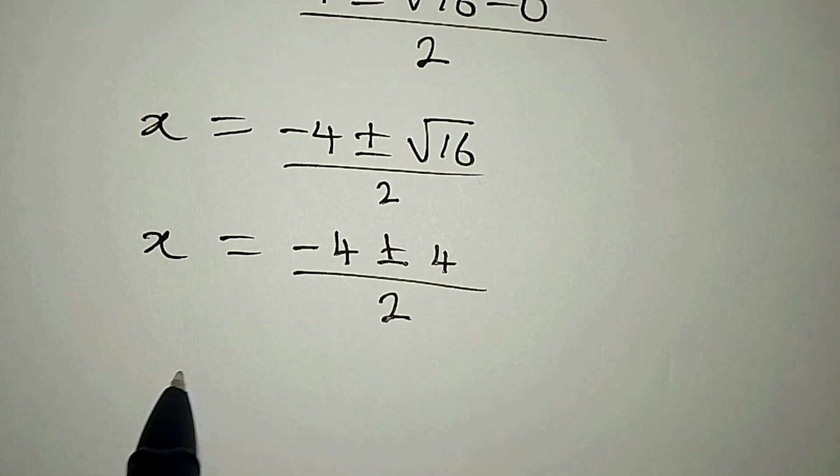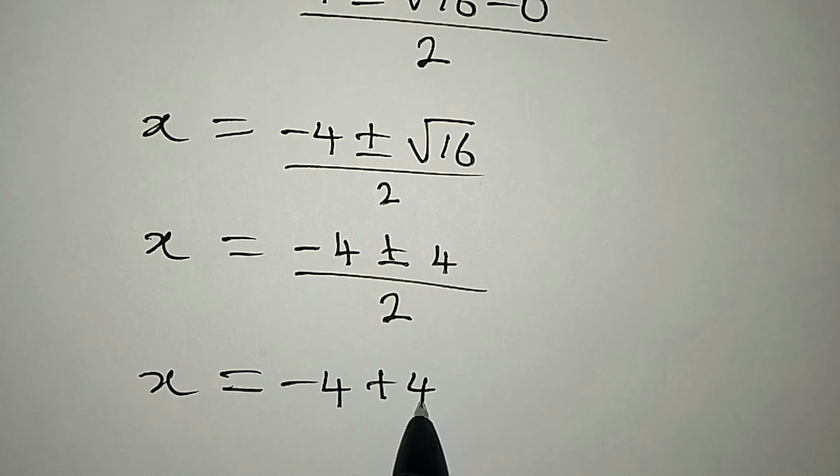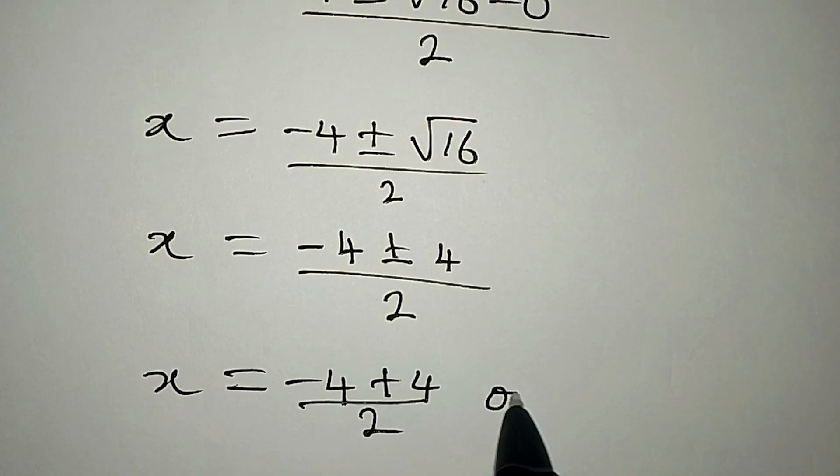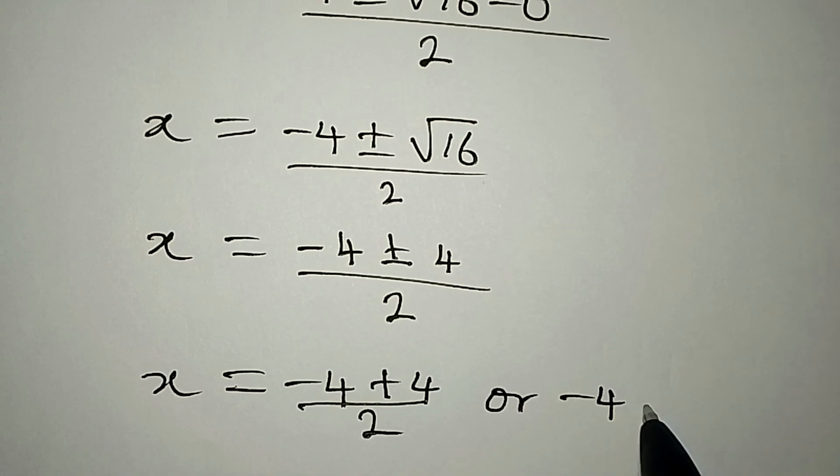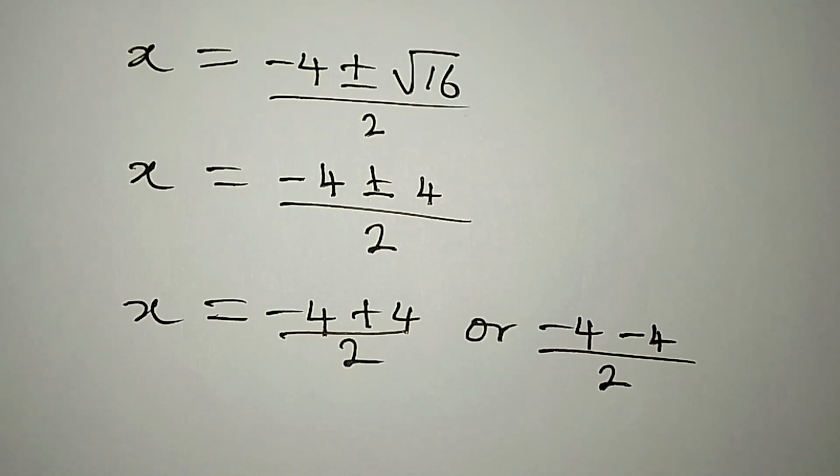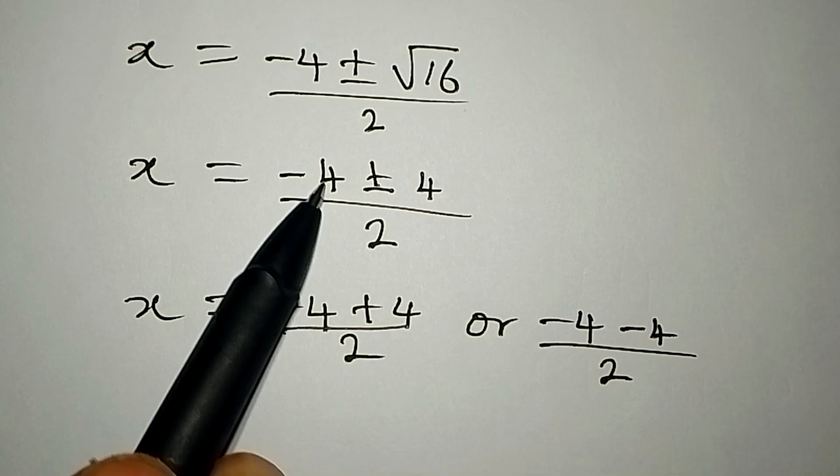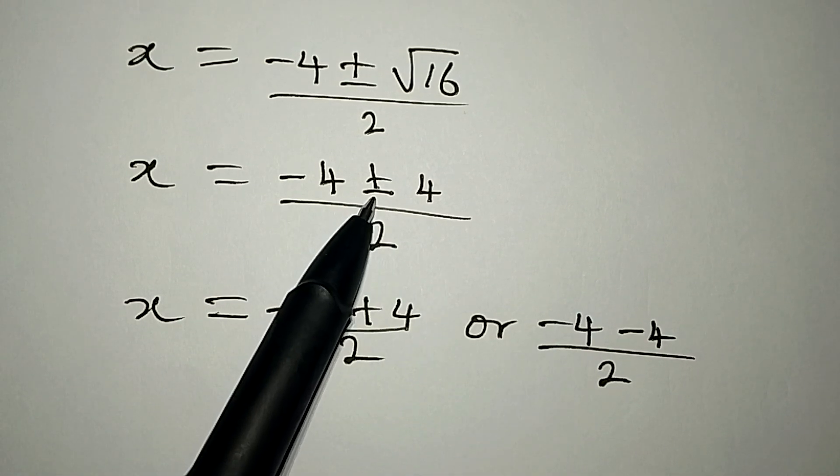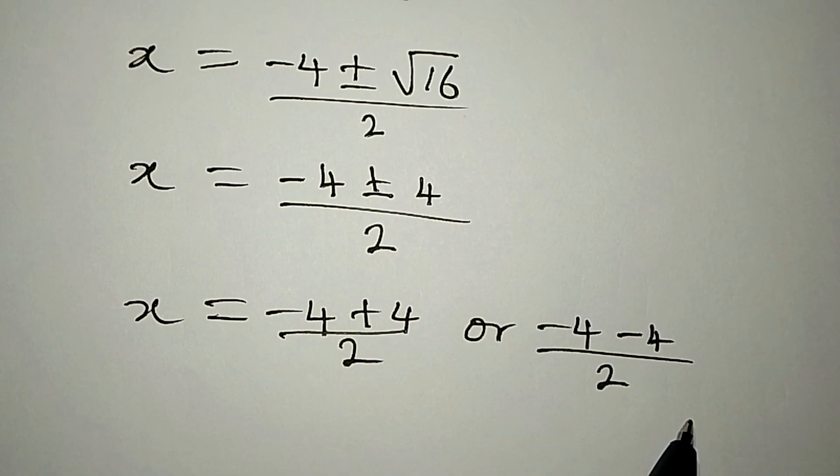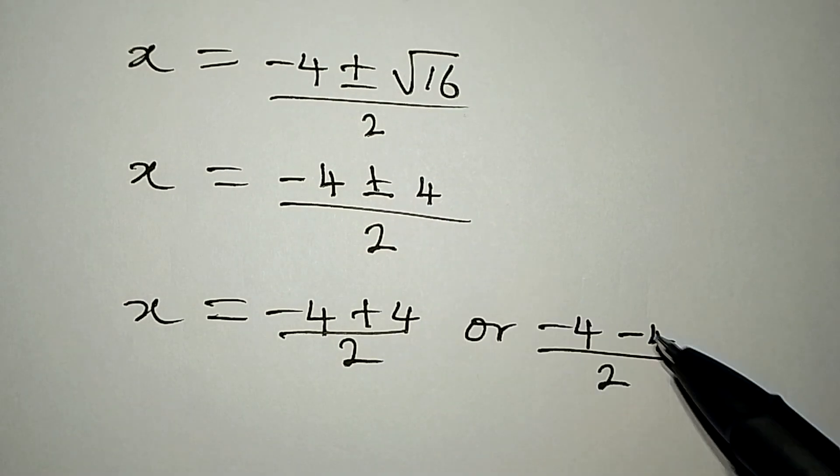Now we are going to split this so that x is equal to minus 4 plus 4 over 2, or minus 4 minus 4. How do I get minus 4 minus 4? I am using this negative 4 is here, then this negative here is what I'm picking. So I now have minus 4. I first picked the positive and then the negative.